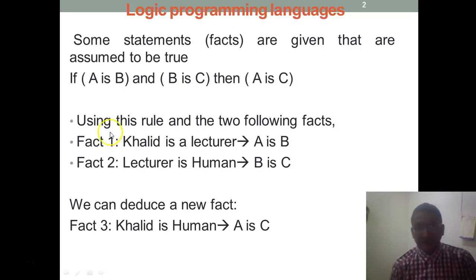Similarly if we see another example, let's say two facts are given to us. Fact one says Khalid is a lecturer, and we can refer this as A is B. The second fact is lecturer is human, so we can write as B is C. So if A is B and B is C, we can easily induce that A is C, that means Khalid is human. So this is a small example just to get the understanding that how to induce new facts out of the given facts.